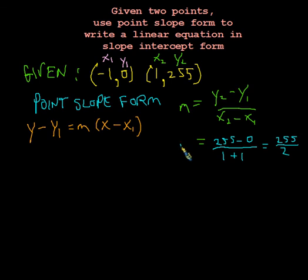It's not the most pleasant result we could have hoped for, but we can make it work. So now we plug in our x1, y1, and our slope into this equation, and we'll simplify to get our slope-intercept form. So let's do it. We'll say y minus 0—oh, we got lucky there.